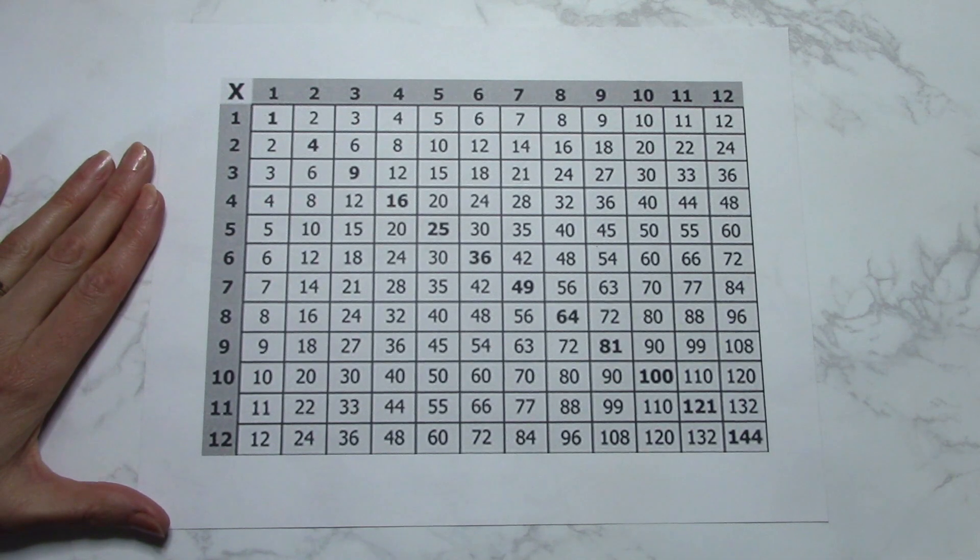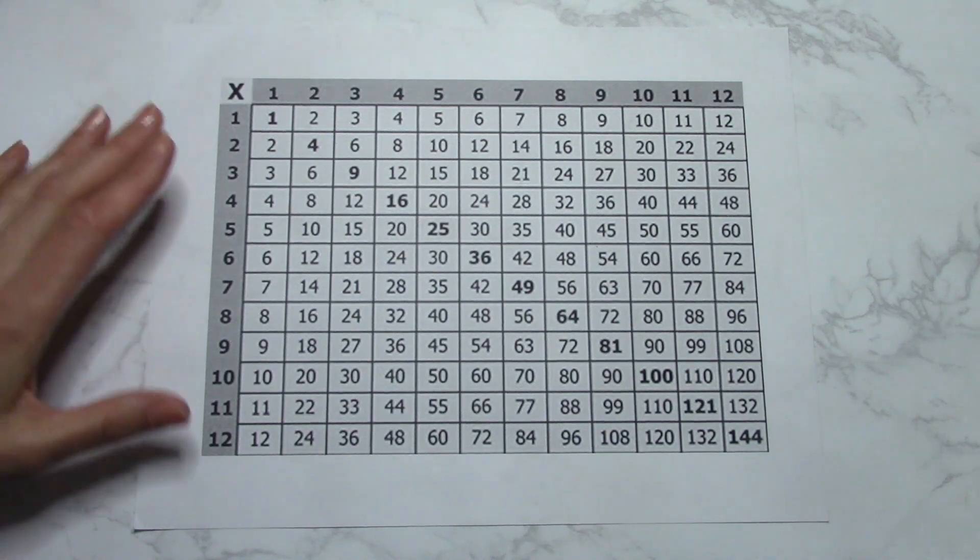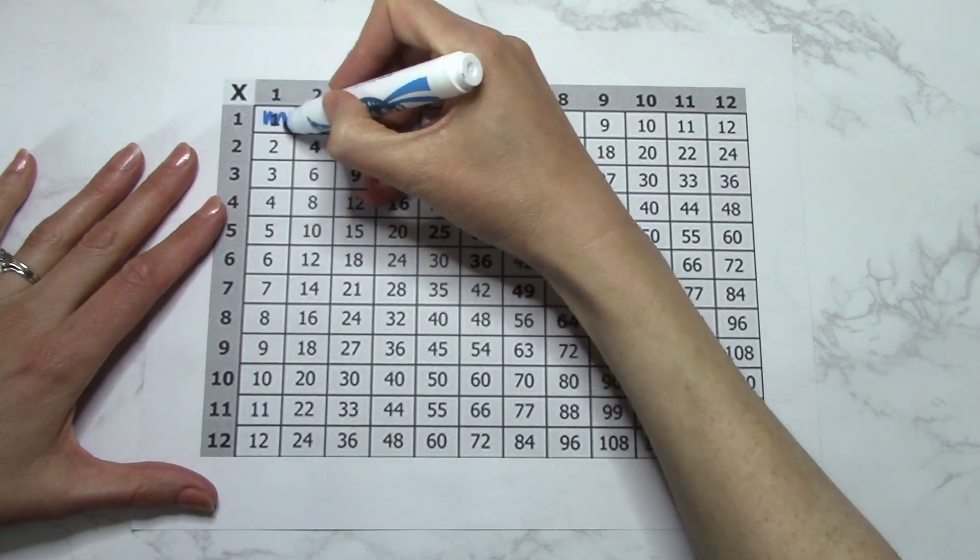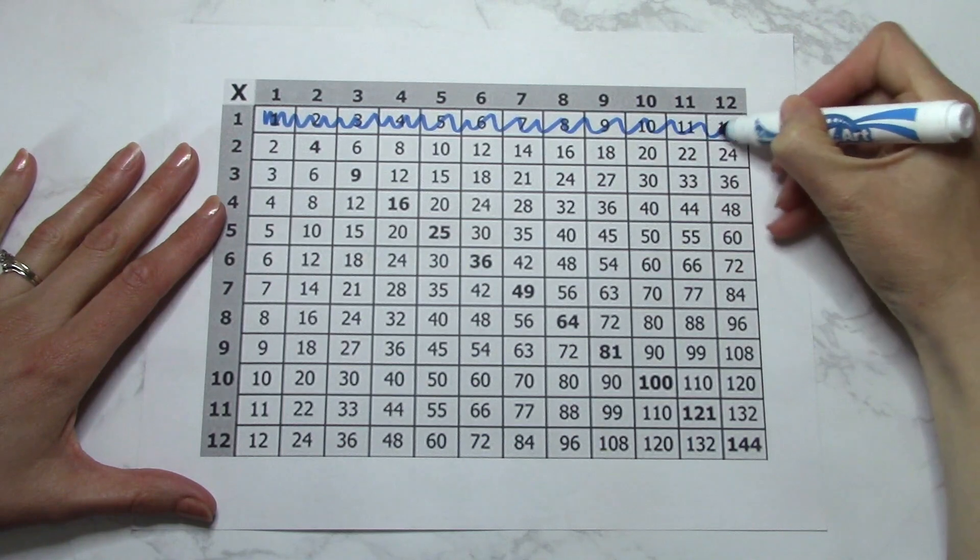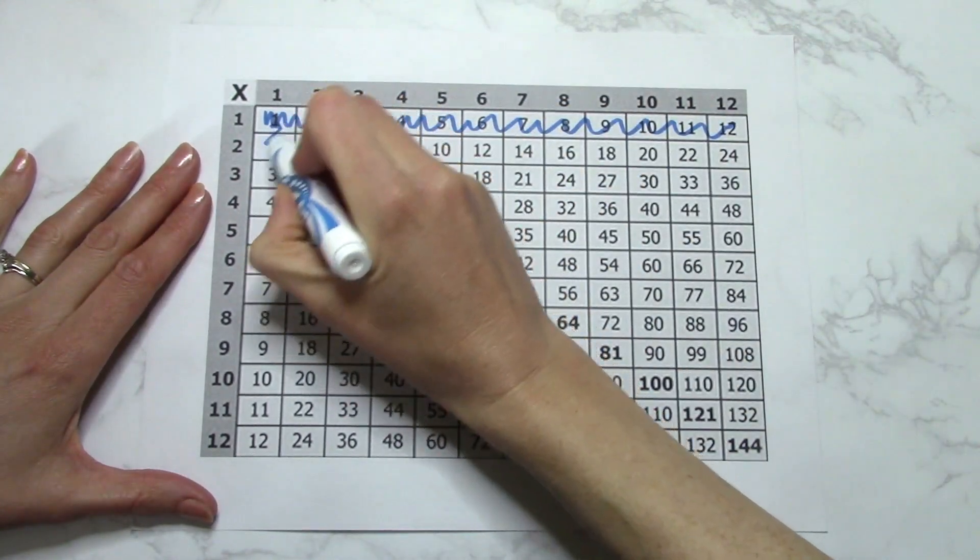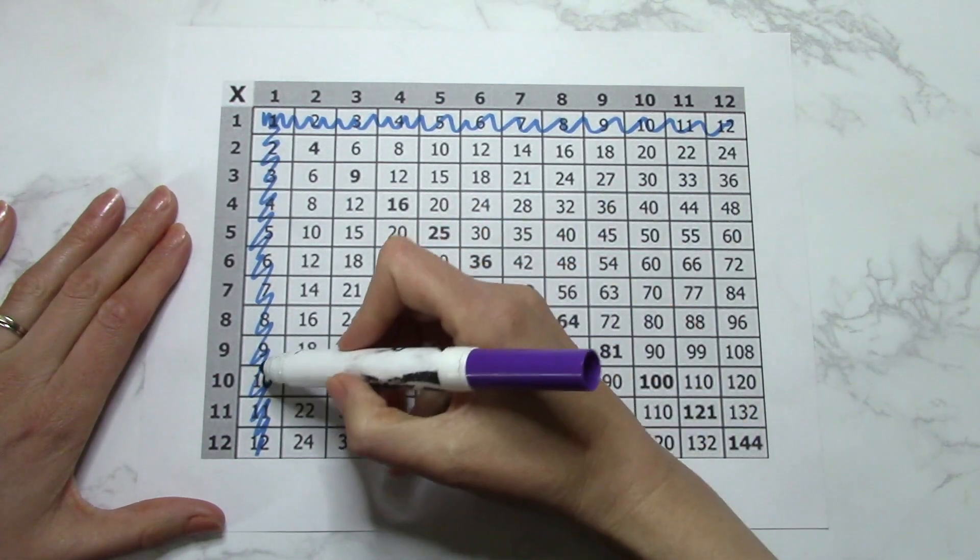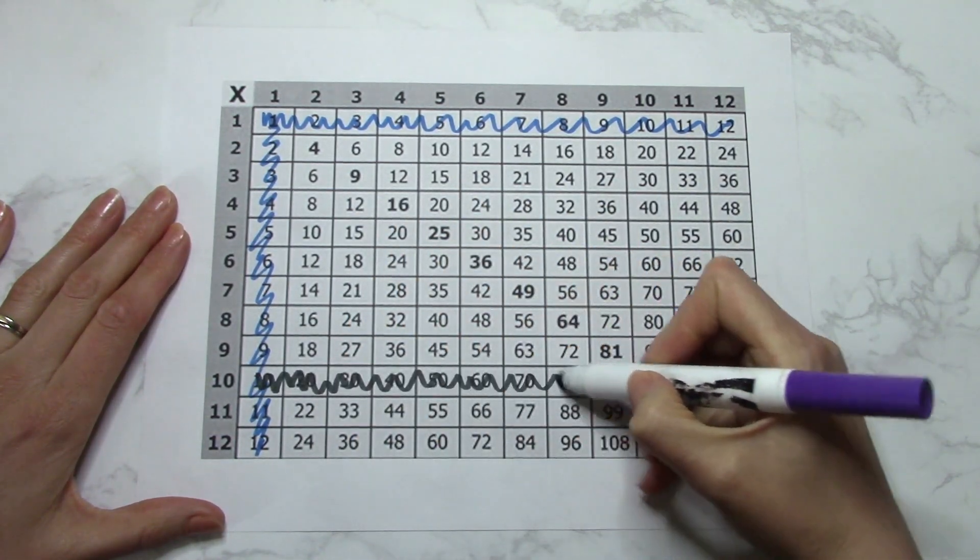Okay, so here's just a standard multiplication chart that I printed. So let's go over this. Everybody knows 1 times any number, right? So 1 times 1 is 1, 1 times 2 is 2. Easy peasy. And same going the other way. Our tens, we've got that. 10 times 1 is 10, 10 times 2 is 20. It's easy.